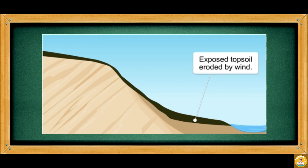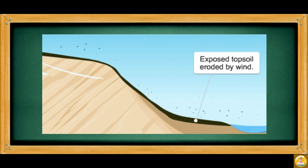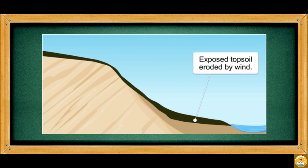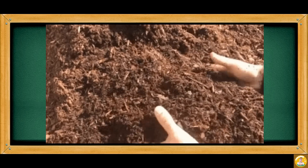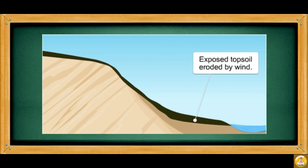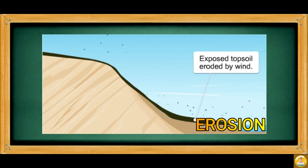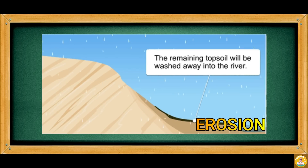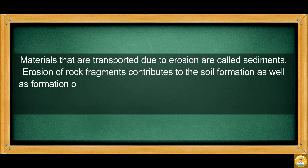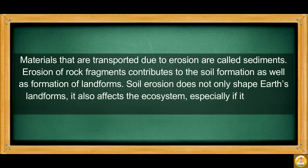Good day, Learners! You have learned in the previous lesson that when rocks are broken down into pieces, they do not stay in one place. Some rock fragments become part of the soil. Others are transferred from one place to another, which is called erosion. Materials that are transported due to erosion are called sediments. Erosion of rock fragments contributes to soil formation as well as the formation of landforms.